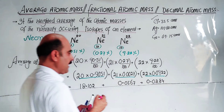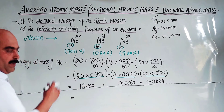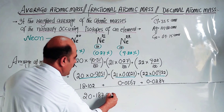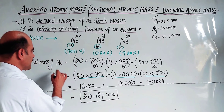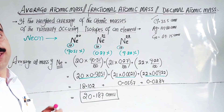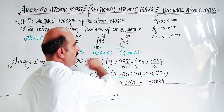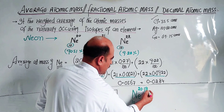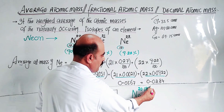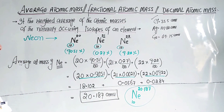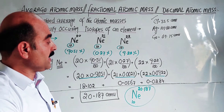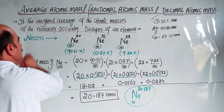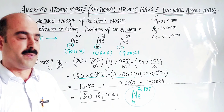The calculation gives an average atomic mass of approximately 20.18 AMU for neon. This is why when we use neon, we don't use 20, 21, or 22 as its atomic mass — we use 20.18. The decimal in the atomic mass is because it is a weighted average, not a whole number mass.